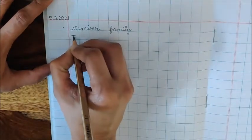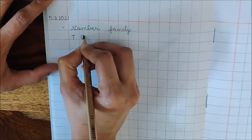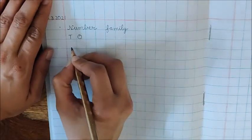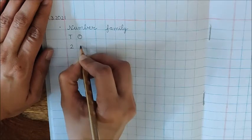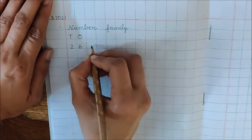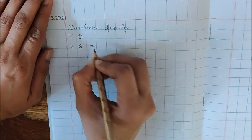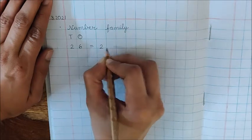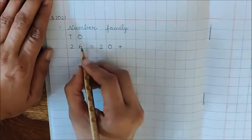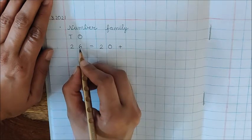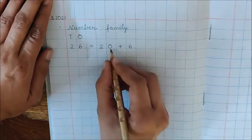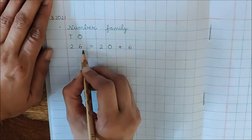Below n write down here t and here write down o. Write numbers below t-o. 26. What is 26 children? 26 is 2 tens and how many ones children? 6 ones. So write down here 6 ones. 2 tens and 6 ones is number 26.